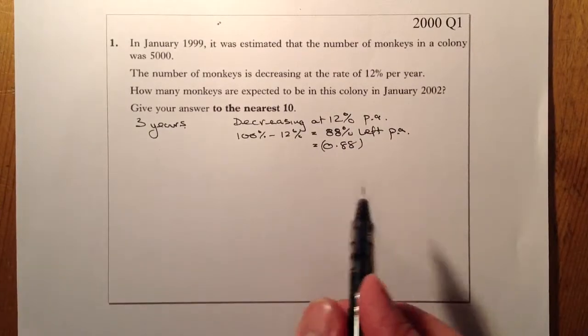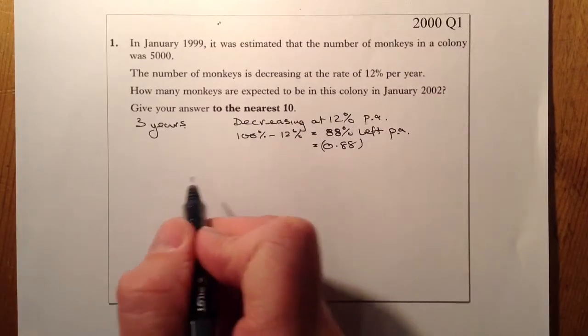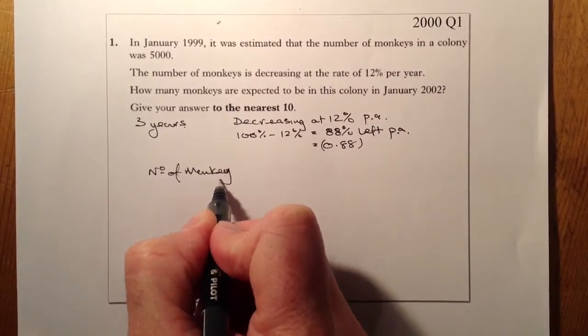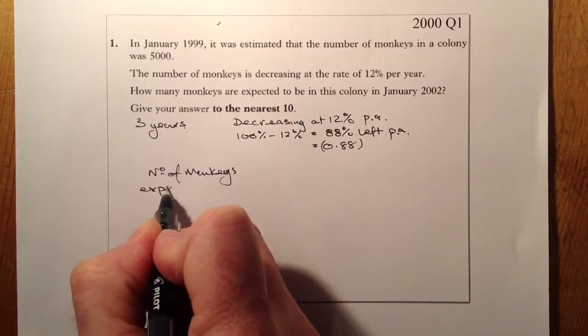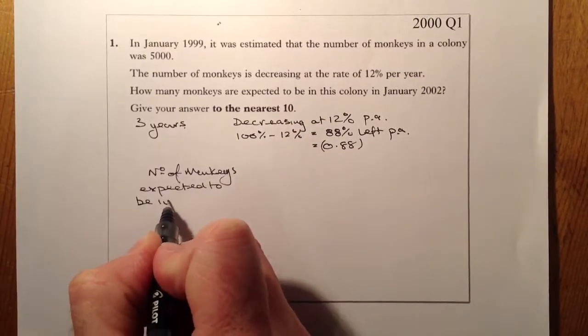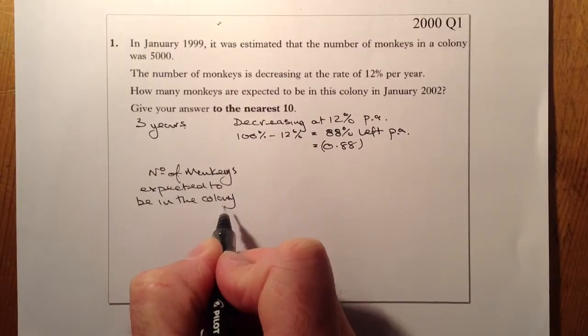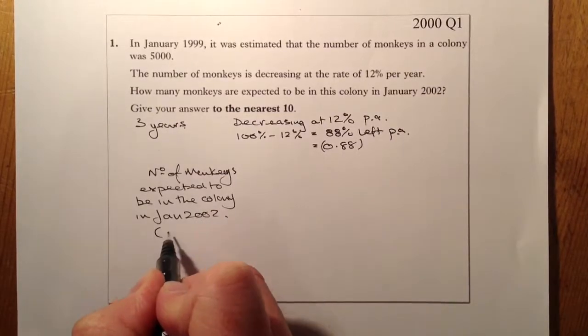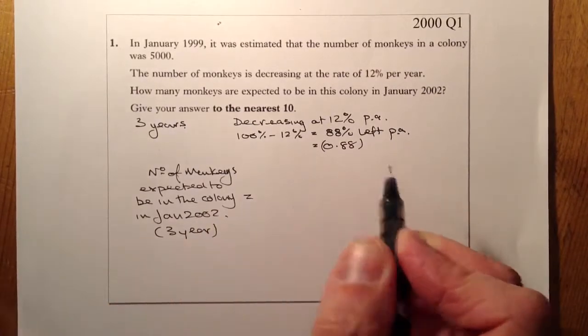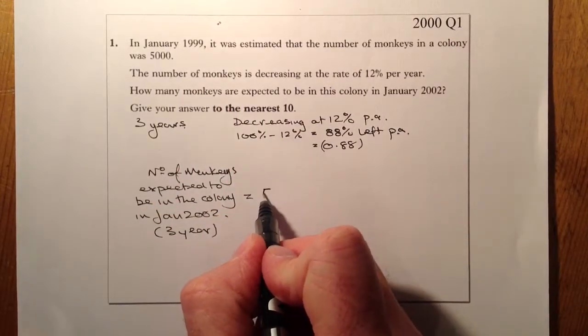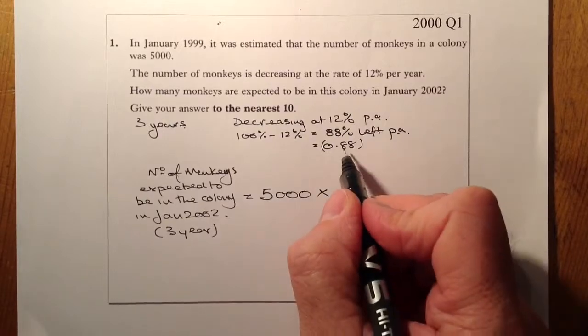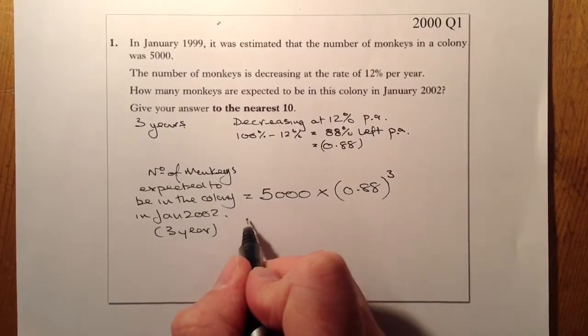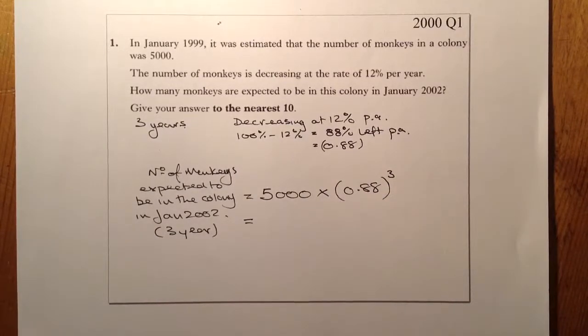So let's set the calculation up. So the number of monkeys expected to be in the colony, and this is going to be after three years, January 2002, and that's the three-year period. It's going to be equal to the number that we start with, which will be 5,000 monkeys. We're going to multiply that by this multiplier. And because it's the three years, I'm going to put that to the power of 3. And what that should do, it should give me the answer from there.